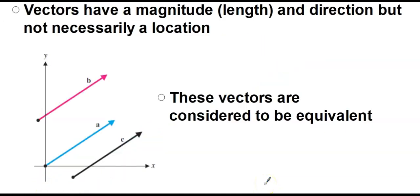Vectors have a magnitude and a direction, but they don't necessarily have a location. All three of these vectors point the same direction - they all point to the northeast, upward and to the right.